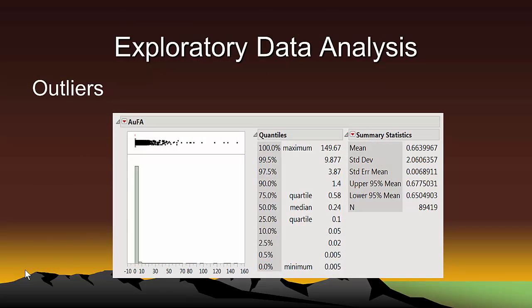The last item on our list of things to look for with exploratory data analysis is outliers. The easiest way to do this is to calculate a histogram of the blast hole grades with a list of quantiles. We can see from the histogram shown here that the number of samples is 89,419. This is the same number as shown in the spreadsheet.